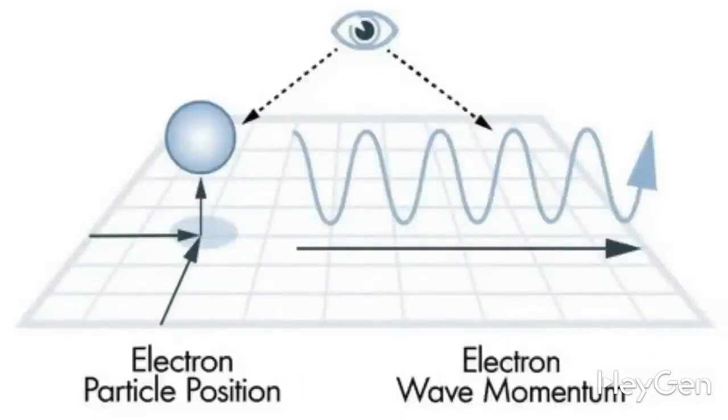Heisenberg's principle shows we can't measure two parameters precisely, revealing a particle's dual nature — wave and position. Heisenberg's uncertainty principle connects us not just to the fact that we can't precisely determine two parameters at the same time, but it ties us to the idea that a particle has two natures at once. This includes the wave nature, where there's velocity, and the ordinary nature, where there's the usual position. And since our particle is quantum, its existence is described by a probability function, so we can't talk about any precision in such measurements.